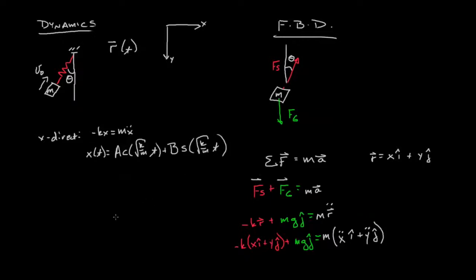In the y direction it'll throw us a little bit of a curveball, not too much. We get negative ky plus mg equals m y double dot. The form of this solution is going to be C cosine square root of k over m t plus D sine square root of k over m t plus some constant, and in this case the constant is negative mg over k.